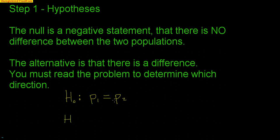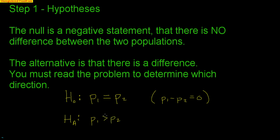If there is no difference, then they're equal. Another way we could write that is that the difference — subtraction — is equal to zero, meaning there is no difference. But if you move P2 over, you get P1 equals P2. The alternative would be that there is a difference. You have to read the problem to know which direction: is population one greater than population two, less than, or do we just care that there's a difference at all?